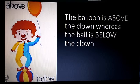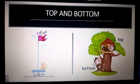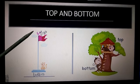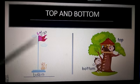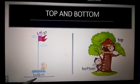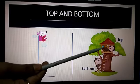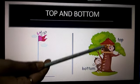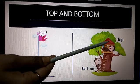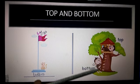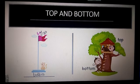Moving to our next concept, that is top and bottom. The bird is on the top of the flag whereas the cat is sitting at the bottom of the flag. Likewise, there are two monkeys — one monkey is eating banana while sitting on the top of the tree, while the other monkey is at the bottom of the tree.